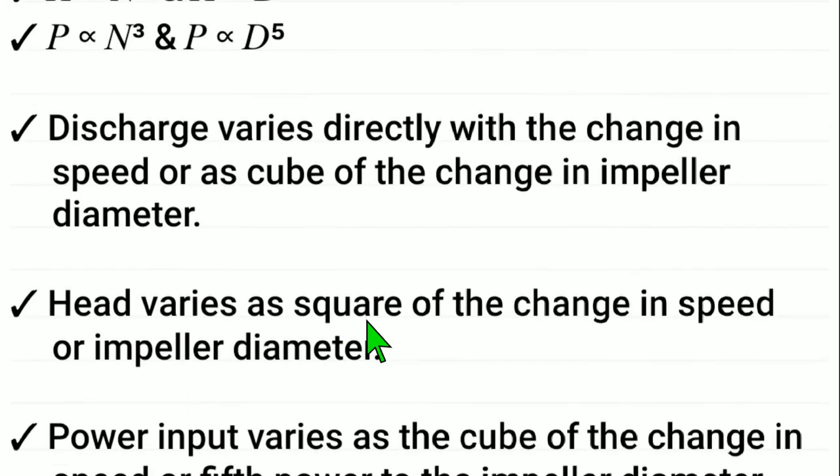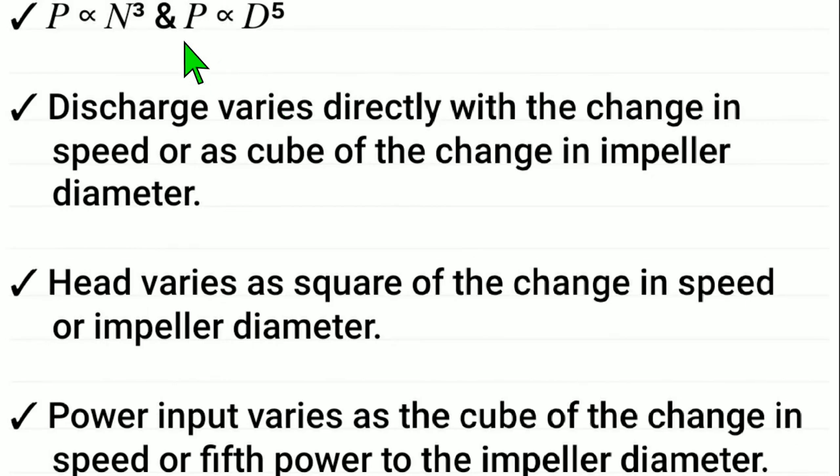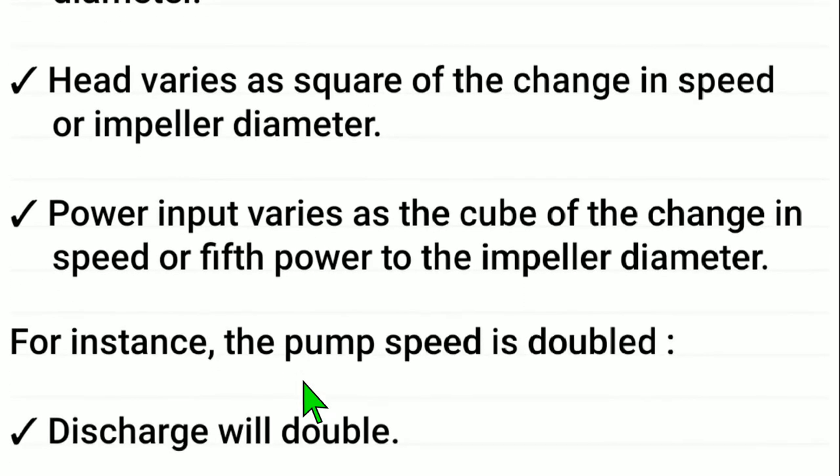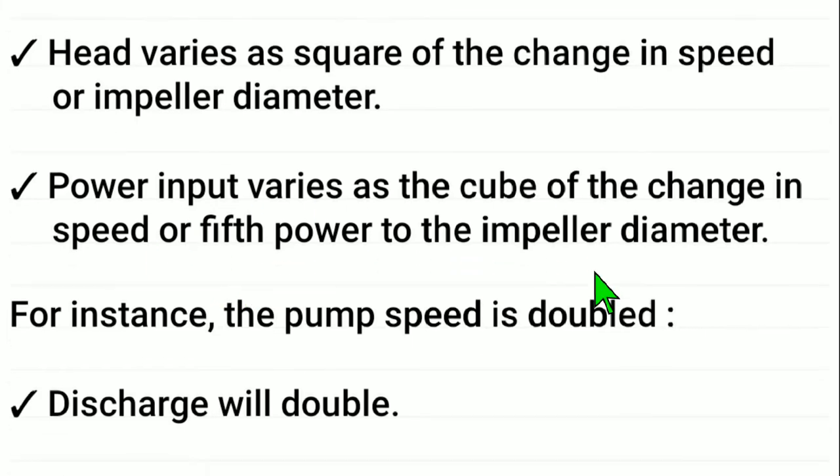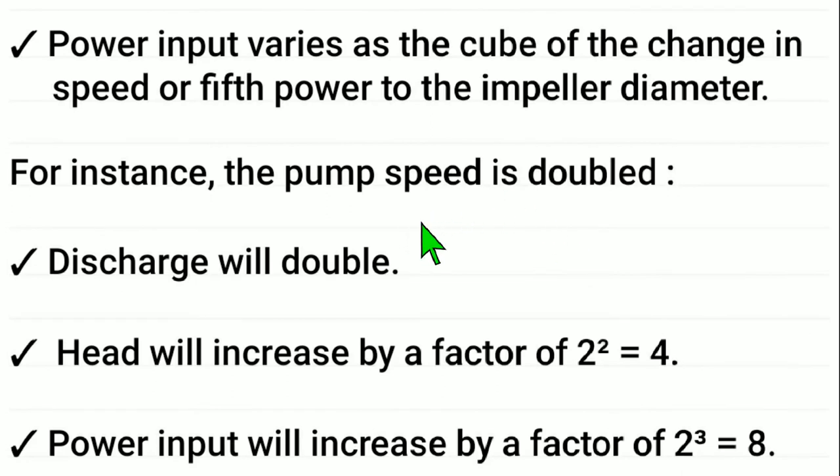Power input varies as the cube of the change in speed or fifth power to the impeller diameter. For instance, if the pump speed is doubled: